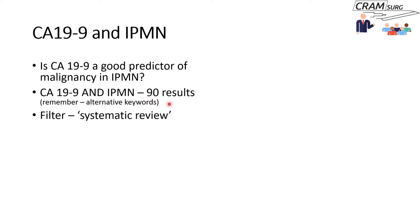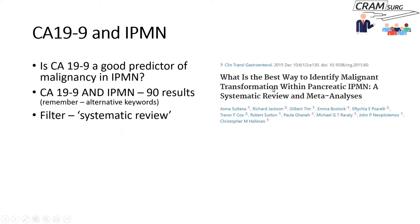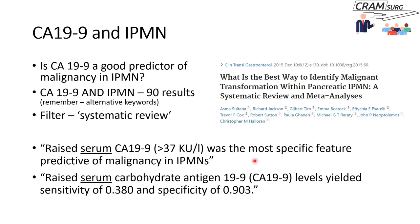90 results was too many — we're busy people. I wanted one or two articles, ideally a systematic review at the top of the evidence hierarchy that would include all relevant literature. So I filtered the search by clicking on 'systematic review' and found a fairly good systematic review looking at predictors of malignancy in IPMN. The review had two really important conclusions: raised serum CA-19-9 was the most specific feature predicting malignancy in IPMNs, yielding a sensitivity of 0.38 and specificity of 0.90 in the diagnosis of malignancy in IPMN.